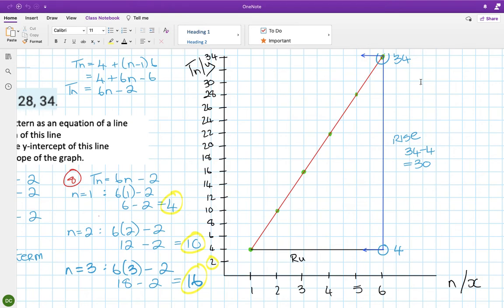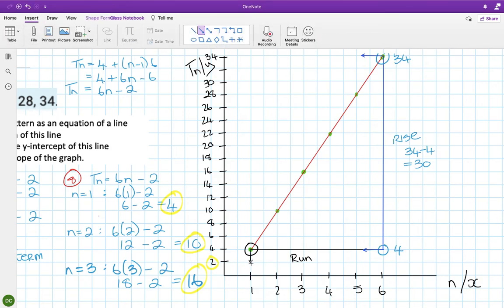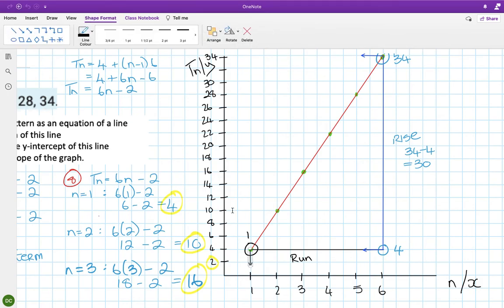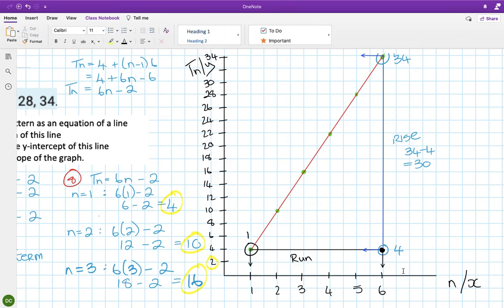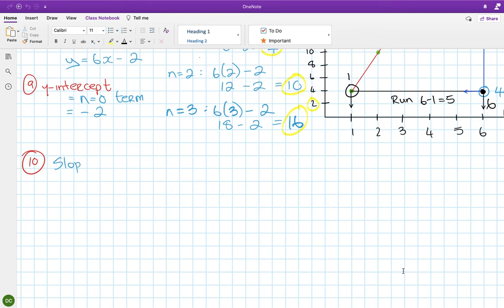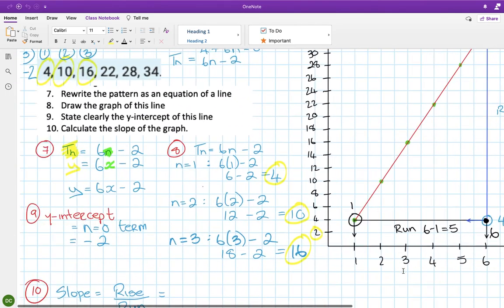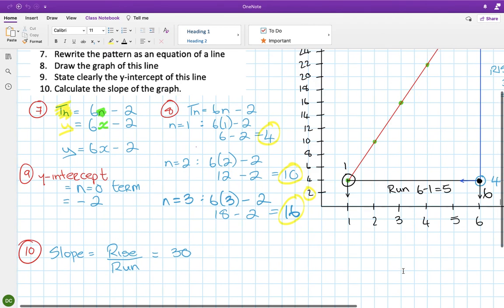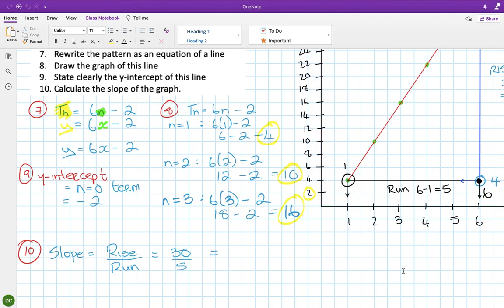Then, to get the run. So, it starts here. But we look down. So, it starts at 1. It ends over here. But again, we look down. So, it ends at 6. So, 6 minus 1 is 5. And then, if I go back over here, to get the slope, you do rise divided by run. The rise we just got there in blue is 30. And the run is 5. And 30 divided by 5 is 6. And that's the slope. Okay. Hopefully that helps.